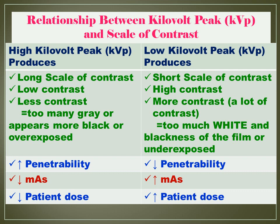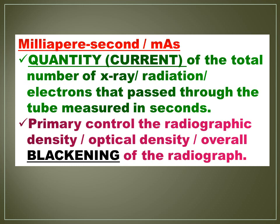Why is the MAS low? Let's define milliampere second, or MAS: the quantity or current of the total number of X-rays, radiation, or electrons that passed through the tube, measured in seconds. MAS primarily controls the radiographic density, or optical density, also known as OD — which refers to the overall blackening of the radiograph.